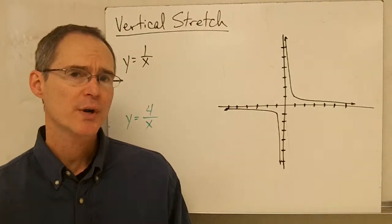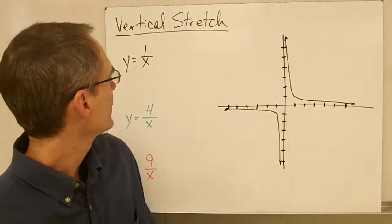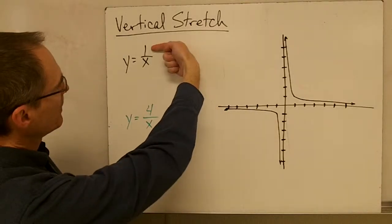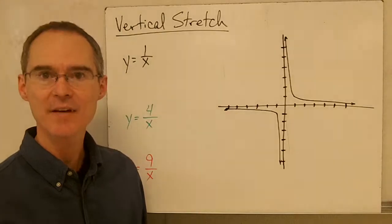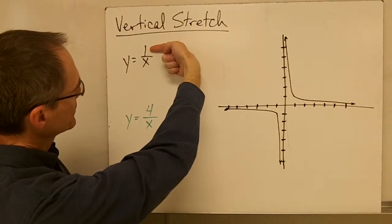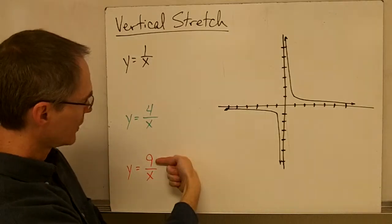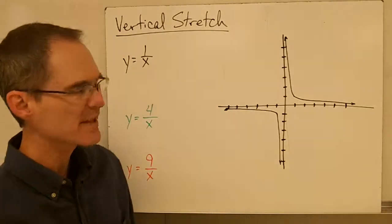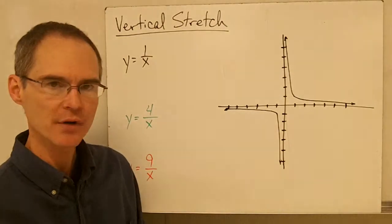When you want to do a vertical stretch on an inverse variation function, we know that the stretch part is controlled by the a value, or the k value sometimes. So whatever this value is, if that value is, for example, greater than 1, we know we're going to have a vertical stretch. How exactly do we do a vertical stretch with an inverse variation function?